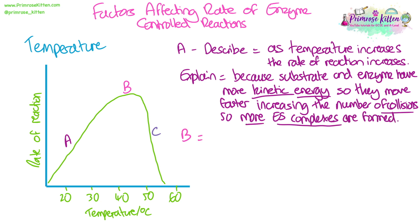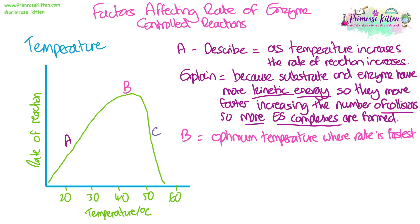Part B on the graph is the optimum temperature. We know this because it's the peak, and so it's where the rate is happening the fastest. If you're describing the overall pattern of the graph, you'd say that as temperature increases, the rate of reaction increases until about 45 degrees, which is the optimum temperature, and then after that, as the temperature increases, the rate of reaction decreases, which is described in part C.